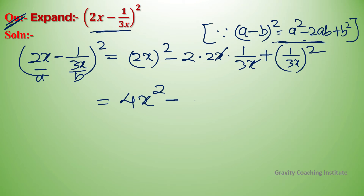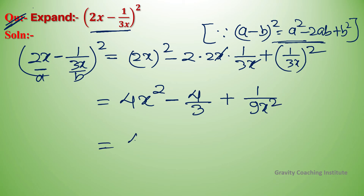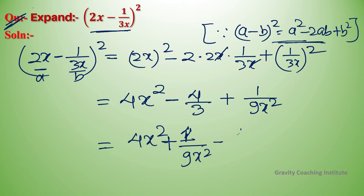The x terms cancel in the middle term, giving 4/3. So the final answer is 4x² − 4/3 + 1/9x².